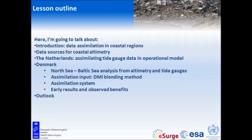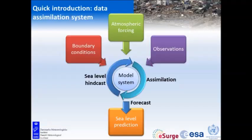When we start to do assimilation, this is very close to the figure shown before, but now we have a loop with a model system where we try to take the sea level hindcast and put some assimilation into it to get the best initial field for our forecast, which is then used for the sea level prediction. The purpose of the assimilation is really to get a good starting field for our forecast.